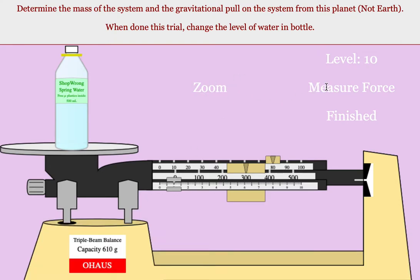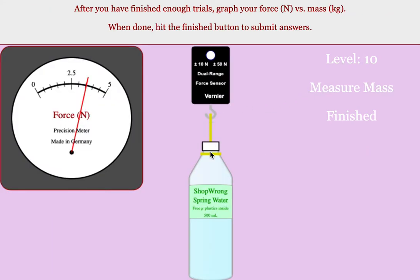Once you are done getting the mass of the bottle you hit measure force and you measure the gravitational pull on the water bottle from the planet. In this case you can see each of these little lines is worth 0.5 so we're at 2.5, 3, 3.5 maybe a shade over but do your best at measuring your force of gravity.